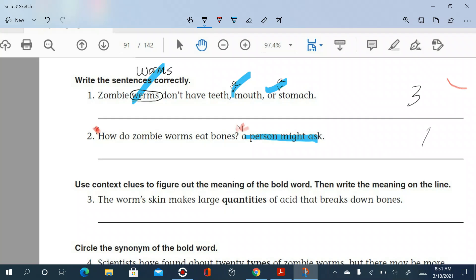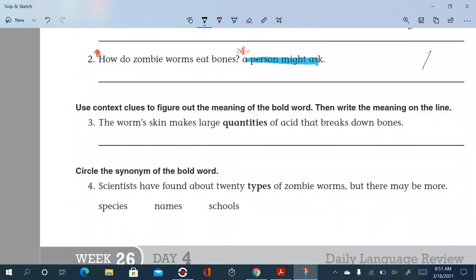Alright, so there's one correction here. Use context clues to figure out the meaning of the bold word, then write the meaning on the line. The bold word is quantities. Let's look for some of these context clues. The worm's skin makes large quantities of acid that breaks down bones.